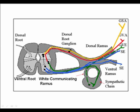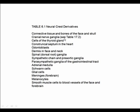Neural crest derivatives include: connective tissue and bones of the face and skull; cranial nerve ganglia; cells of the thyroid gland; the conotruncal septum in the heart's outflow tract; odontoblasts; dermis of the face and neck; spinal/dorsal root ganglia; sympathetic chain and preaortic ganglia; parasympathetic ganglia along the GI tract; cells of the adrenal medulla (chromaffin cells); Schwann cells; glial cells; melanocytes; and smooth muscle cells in blood vessels of the face and forebrain — all originating from neural crest cells.